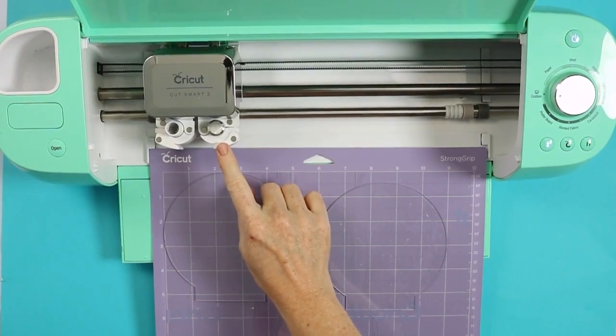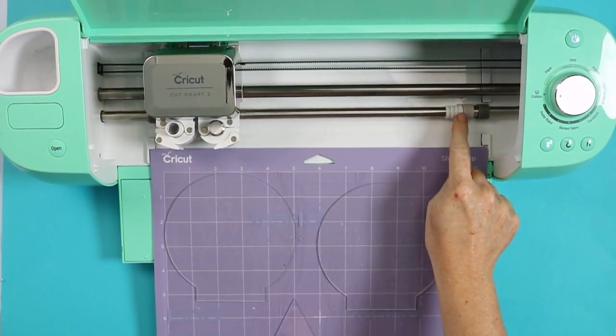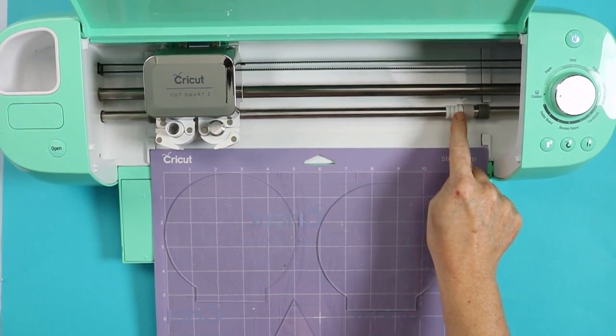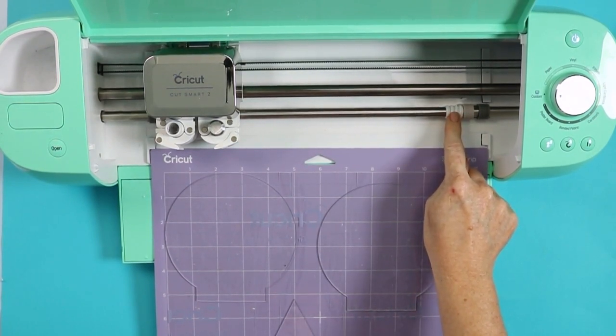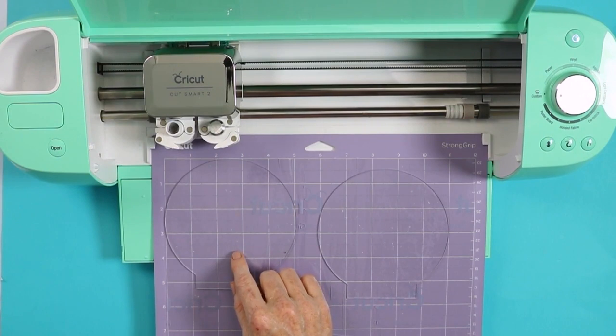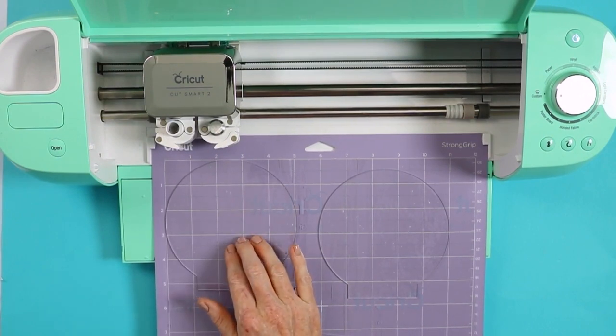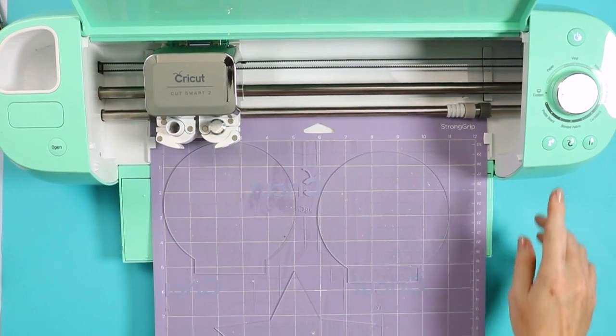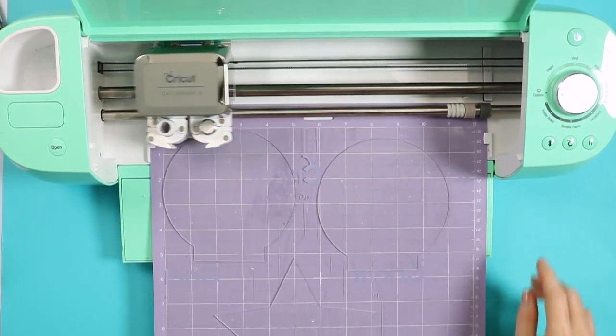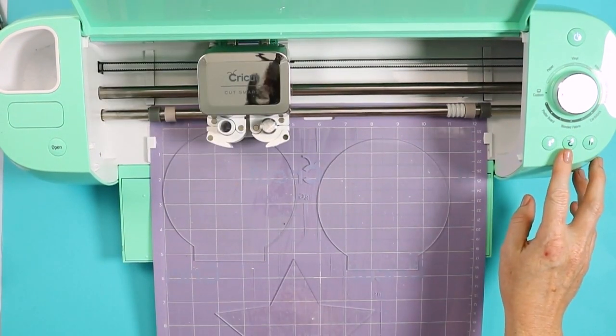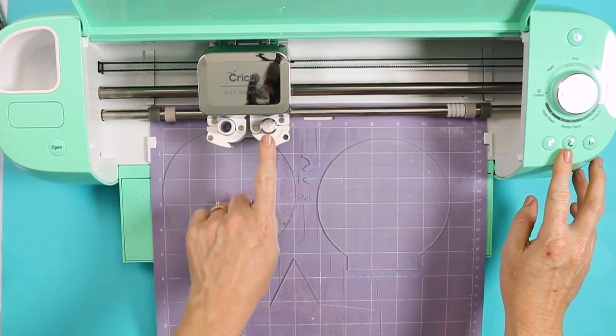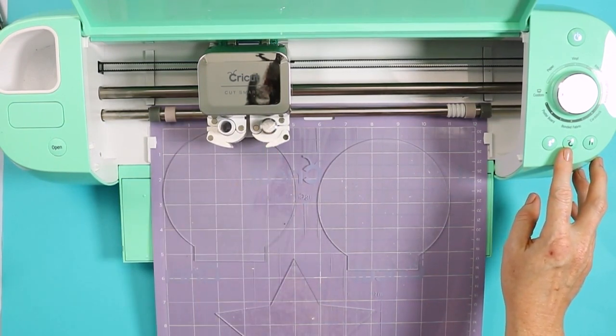I've added the engraving tool to clamp B, moved my star wheels all the way over to the right. And I went ahead and picked chipboard as my setting. I did go ahead and mirror the mat because I want the cut lines to be on the back of my acrylic. I am using the chipboard setting and now I'm going to load my mat. Then we'll press the go button. Remember it thinks it's cutting, but actually we have the engraving tip in clamp B.